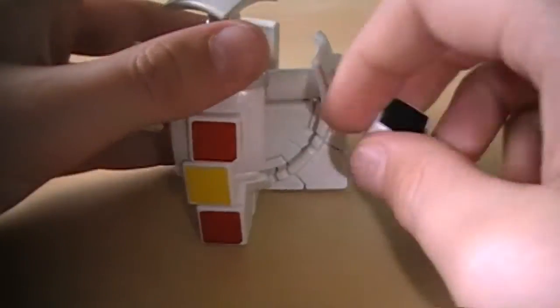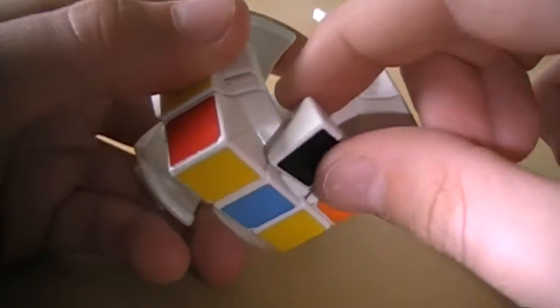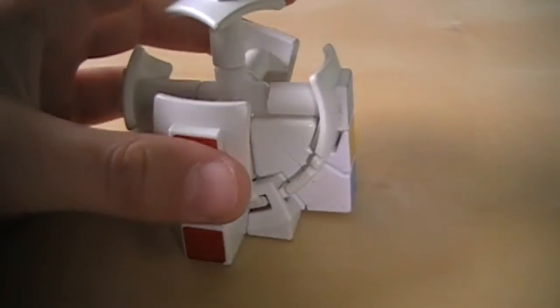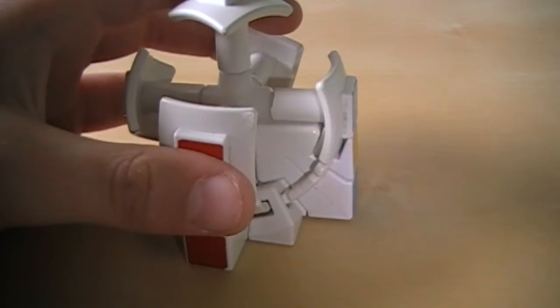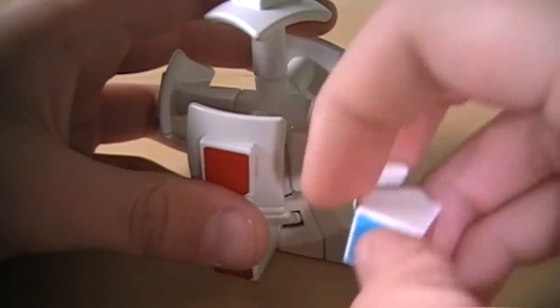There we go. And then we will grab one of these pieces that look like this, and then grab two of these smaller edge pieces that look like this, and then just slide those both on there.